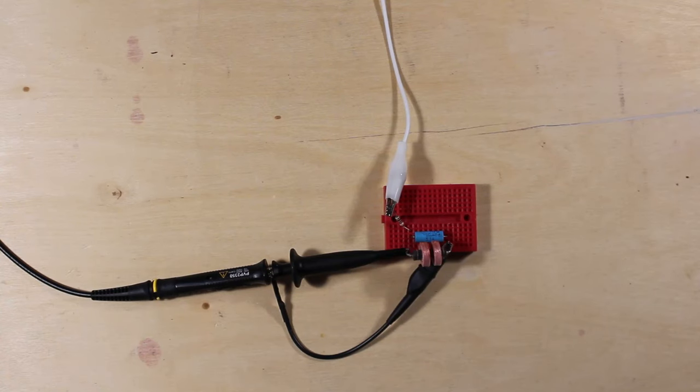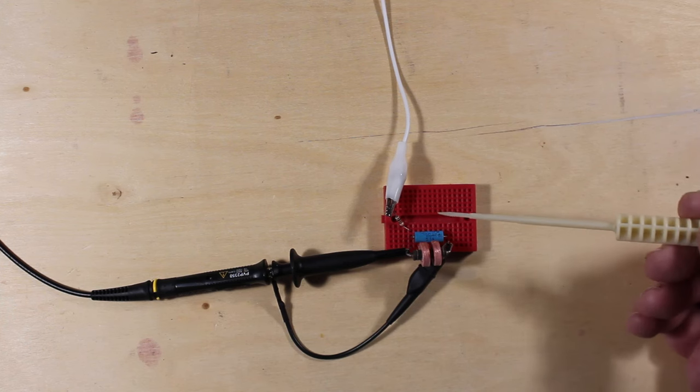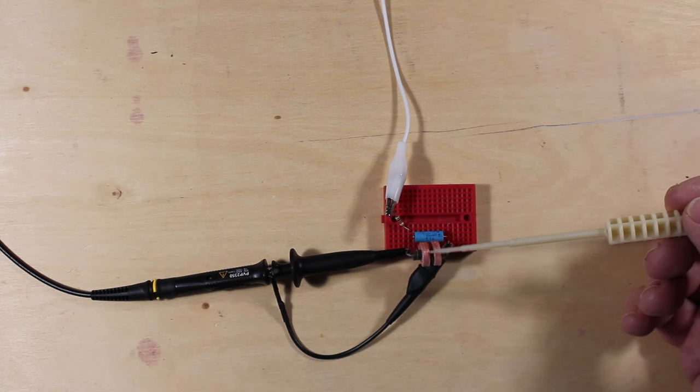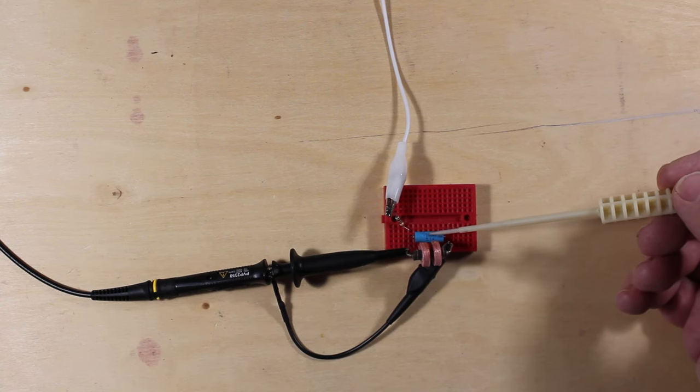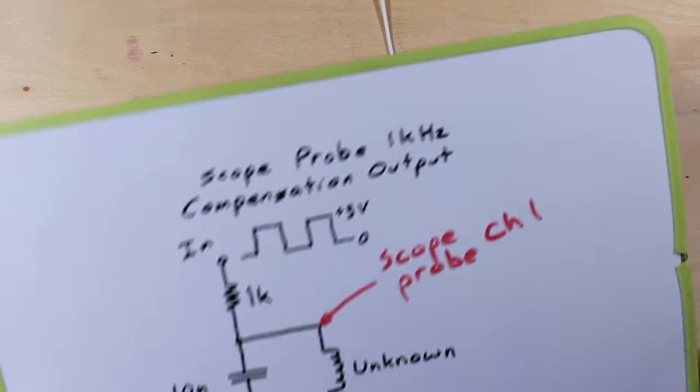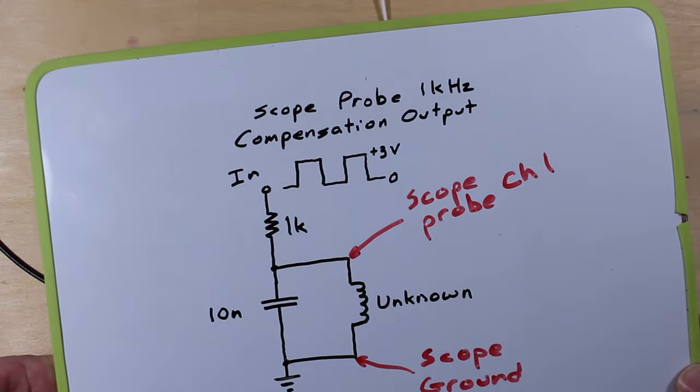So I did a video about measuring an unknown inductor using the parallel resonance method, and this is the circuit that we used. Very simple - this is the unknown inductor, this is a known 1% capacitor, and this is a 1K resistor here. This circuit may look familiar if you've seen that video.